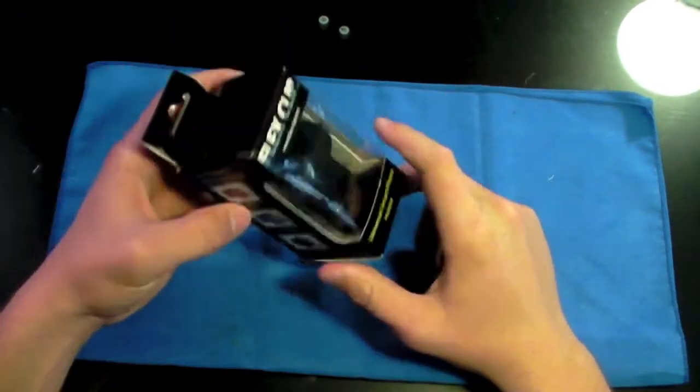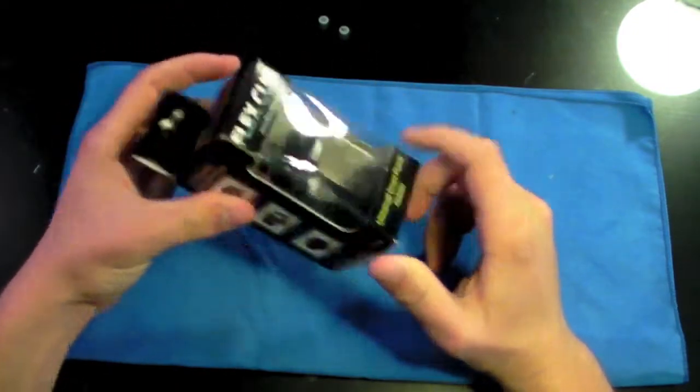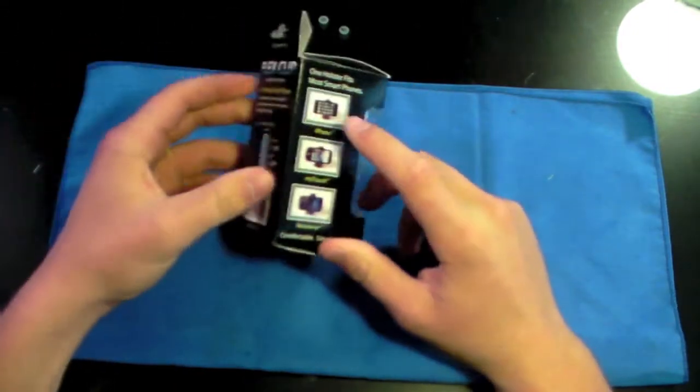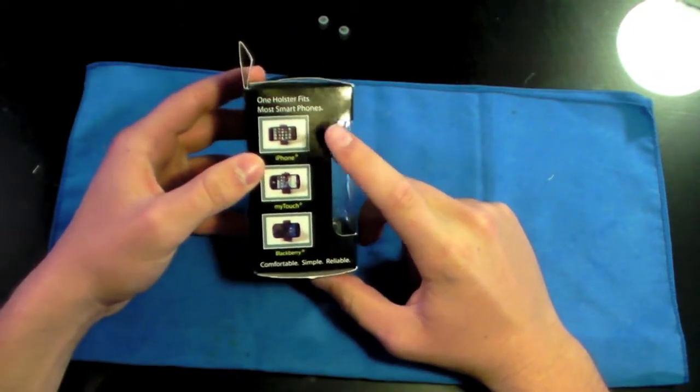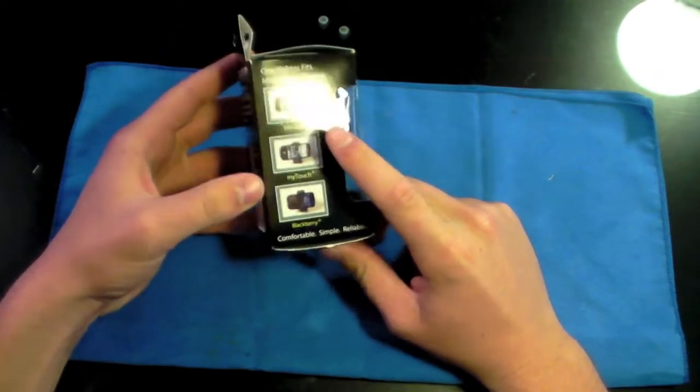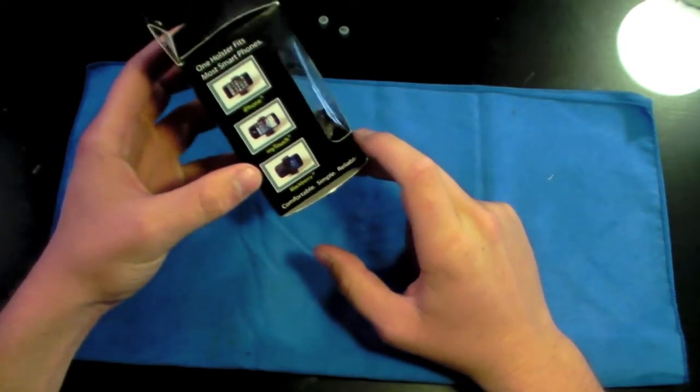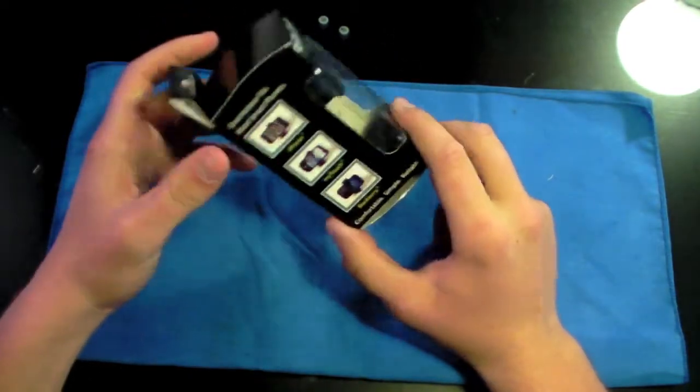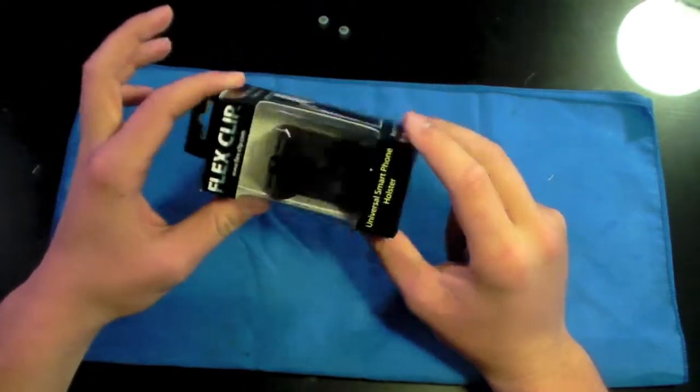Now one thing that's really cool about this clip is it's supposedly a universal phone holster. It says it can fit almost any kind of phone, any kind of smartphone, and it advertises it working with the iPhone, the My Touch, and the Blackberry, and any other touch screen phones. This will work with your Nexus One, your Droid, any other phone like this you will be able to use the FlexClip with.